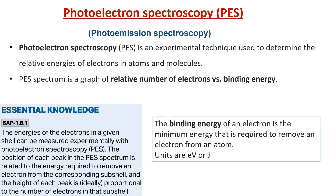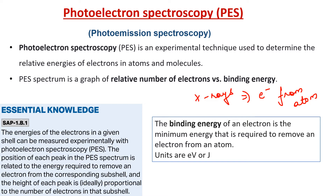PES is photoelectron spectroscopy, also called photoemission spectroscopy. It is an experimental technique used to determine the relative energies of electrons in atoms and molecules. In this technique, X-rays carry enough energy to remove electrons from atoms — whether core electrons or valence electrons. When these electrons are removed, they give signals which form the PES spectrum.